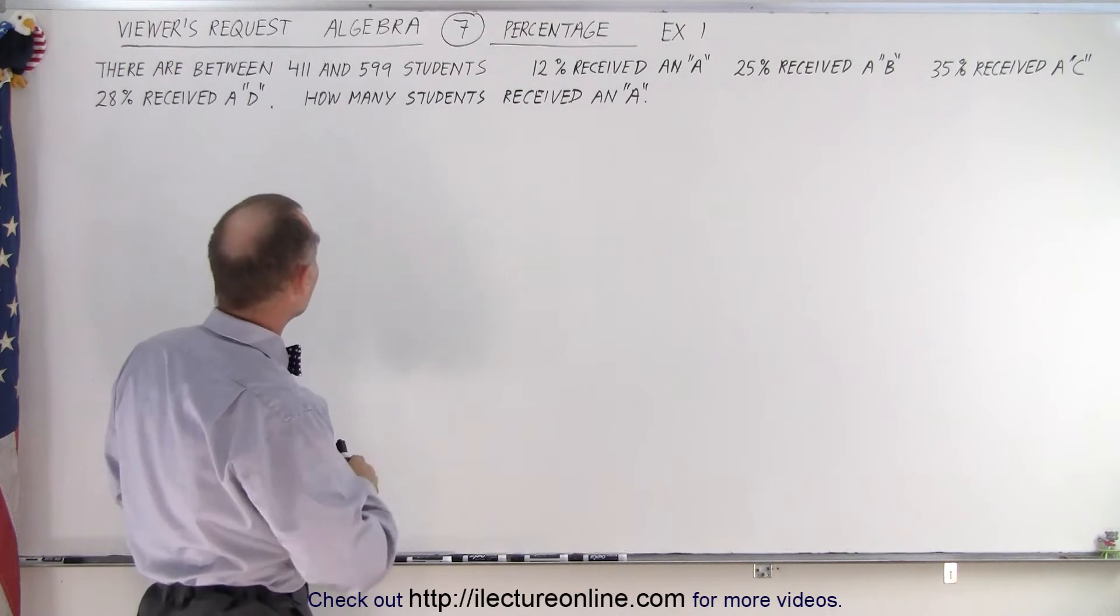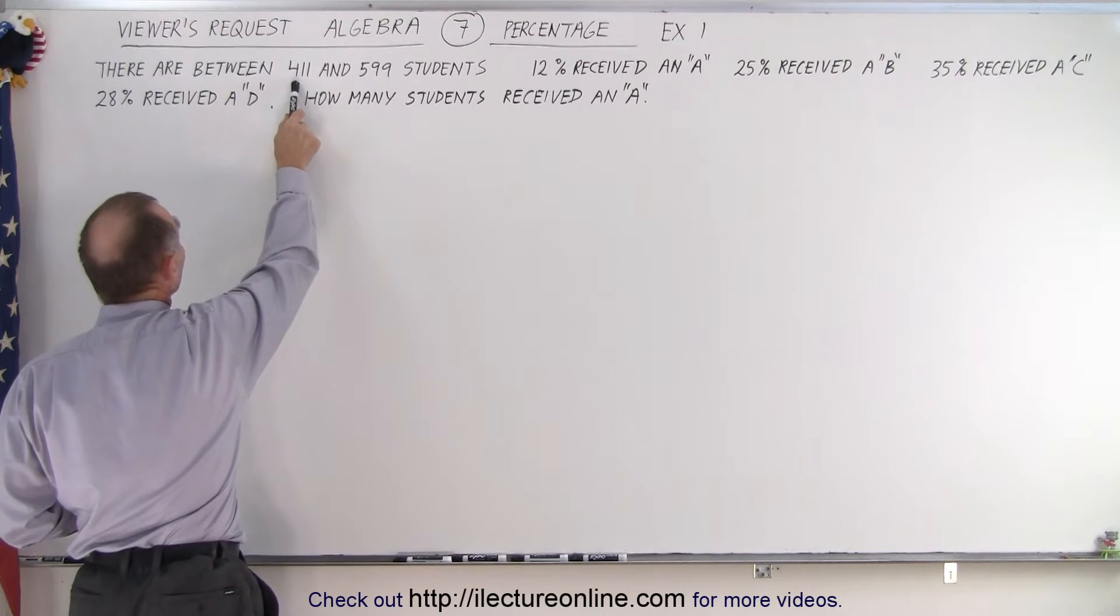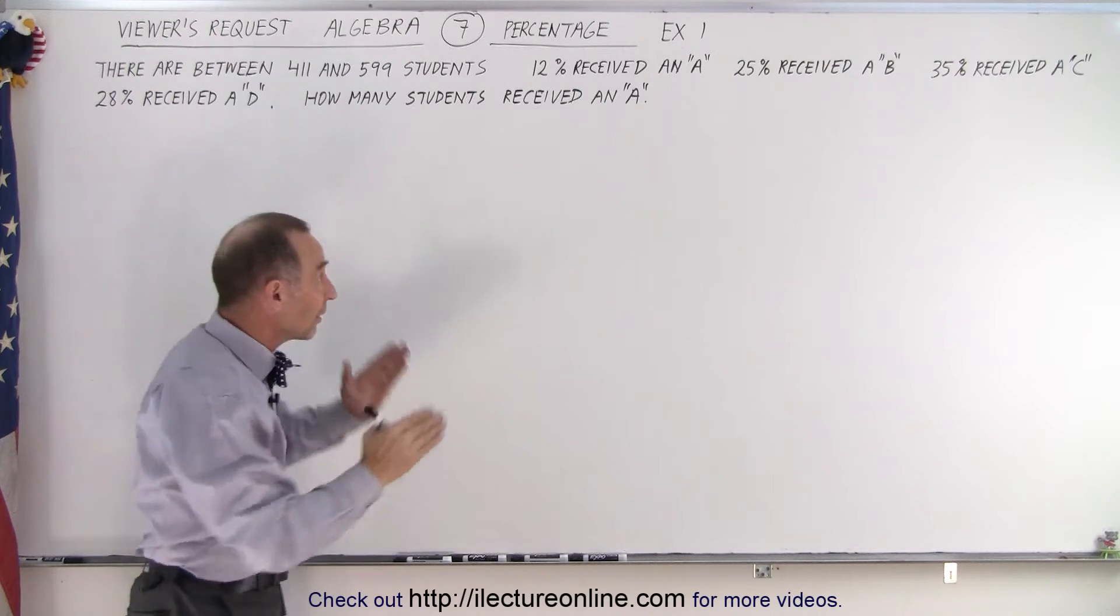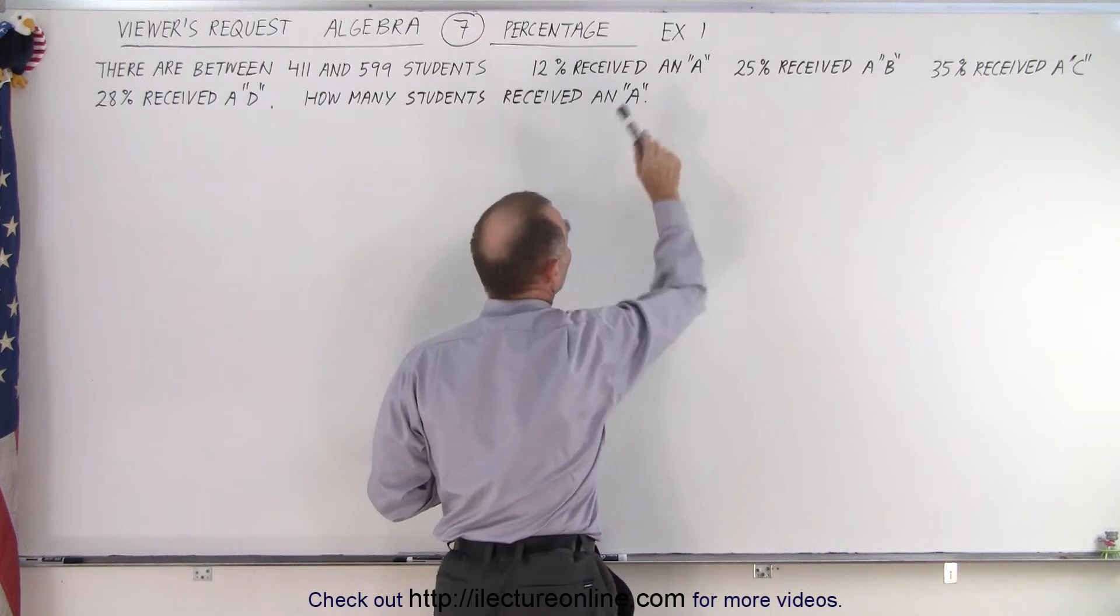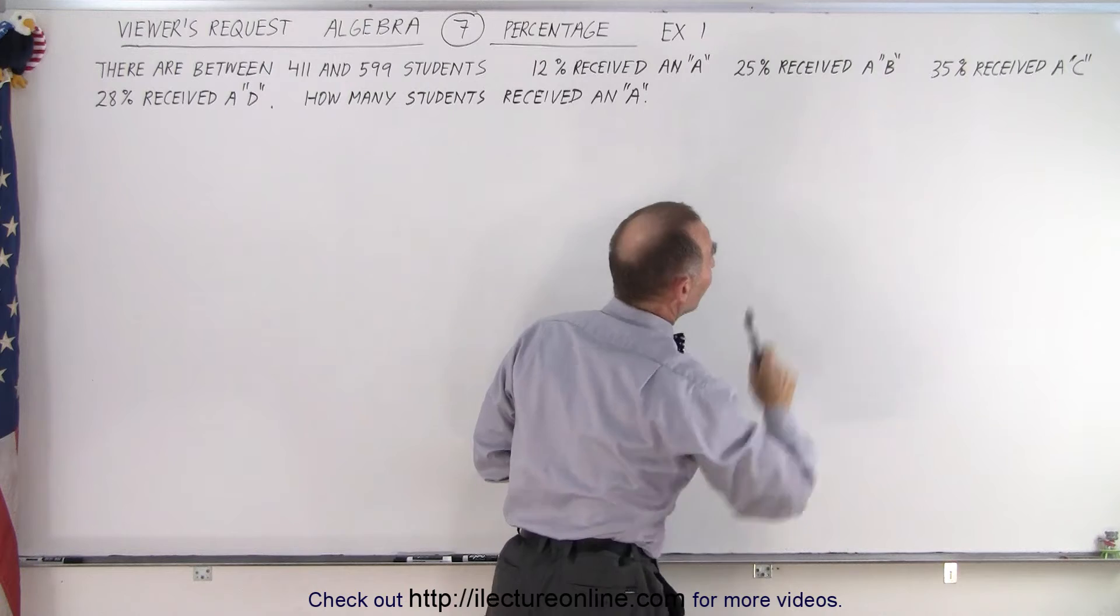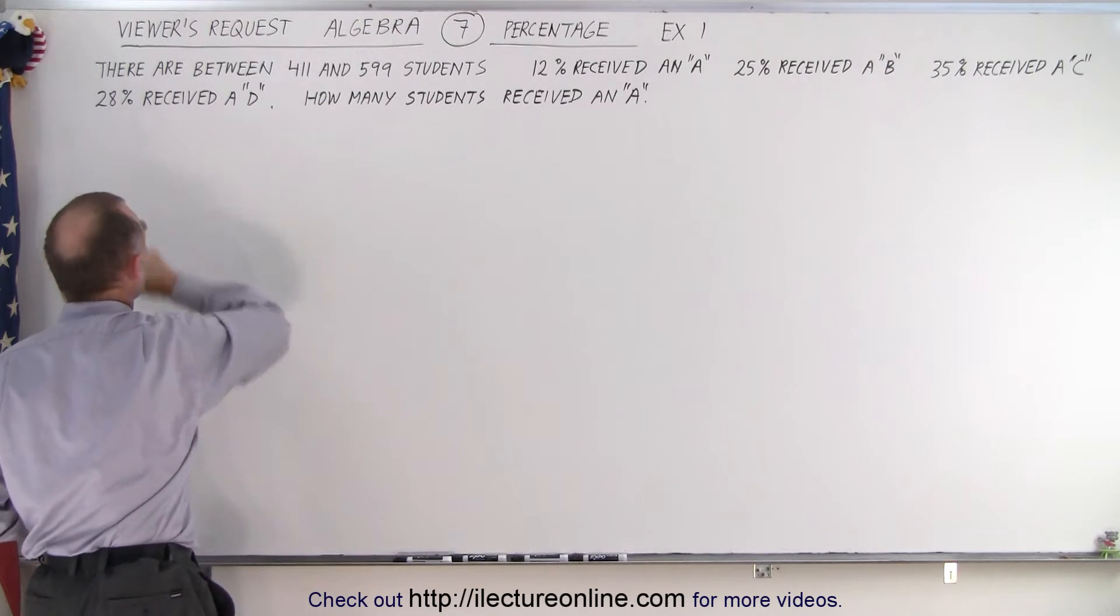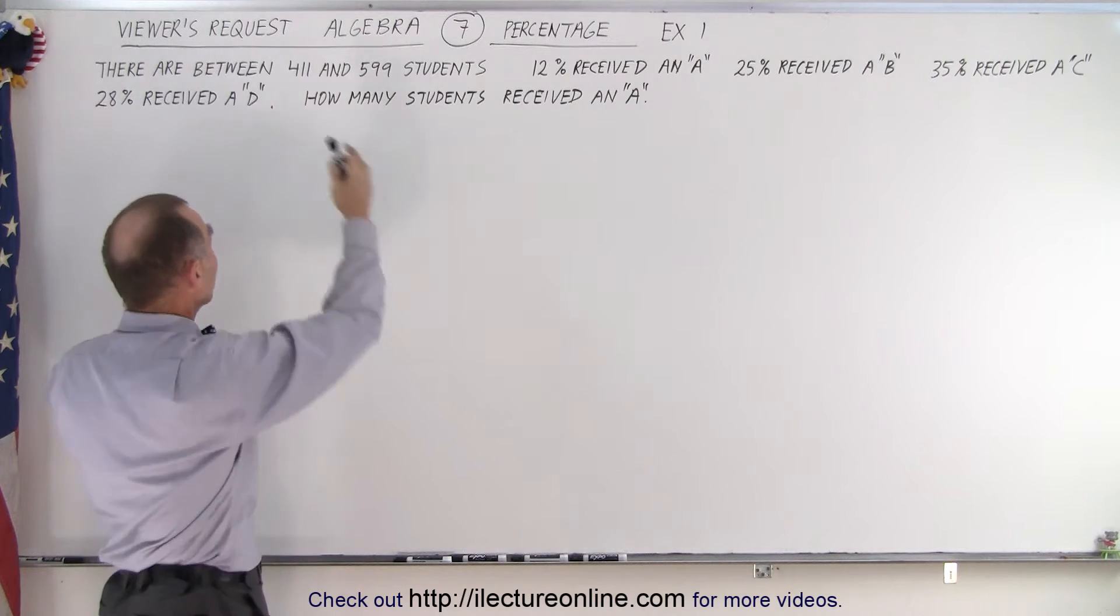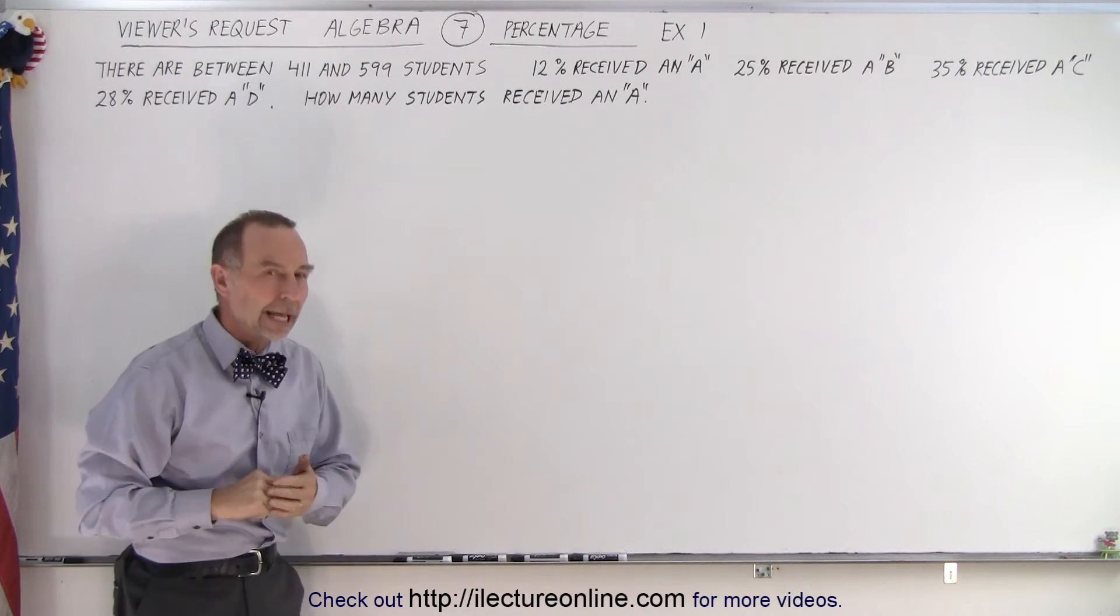It's an algebra problem. It deals with percentages. Notice that they tell us there are between 411 and 599 students. They don't tell us the exact amount, they just give us a range. They do tell us that 12% of those students received an A, 25% received a B, 35% received a C, and 28% received a D. They want us to figure out how many of the students received an A.